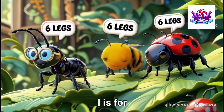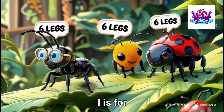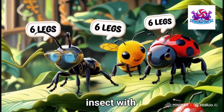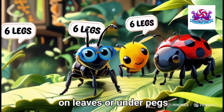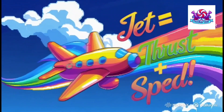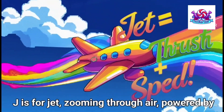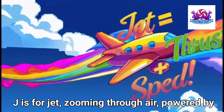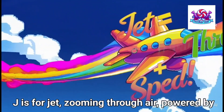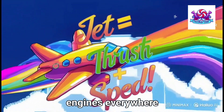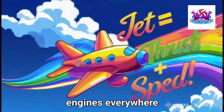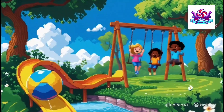I is for insect with six little legs, crawling on leaves or under pegs. J is for jet, zooming through air, powered by engines everywhere.